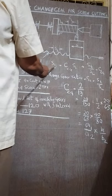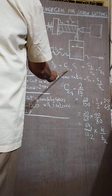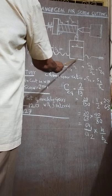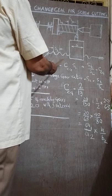And the change gear, the equation is ST is equal to CG, means change gear, into SL. SL is the lead screw lead or pitch, whatever we call it. Normally we talk about lead, not the pitch.